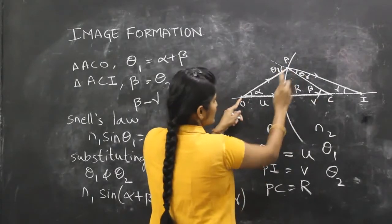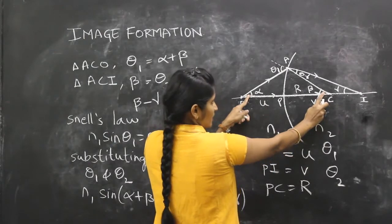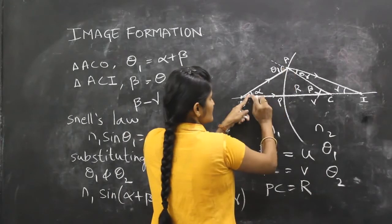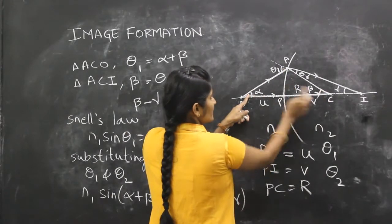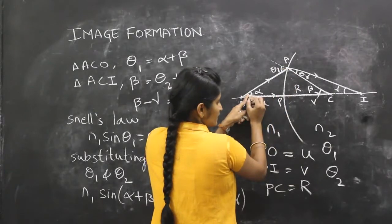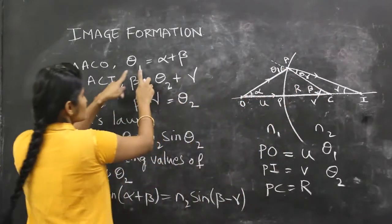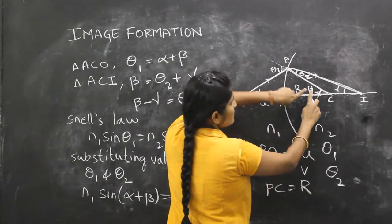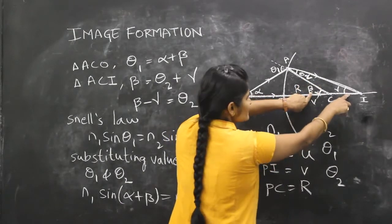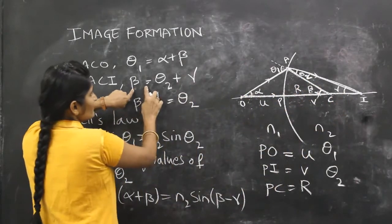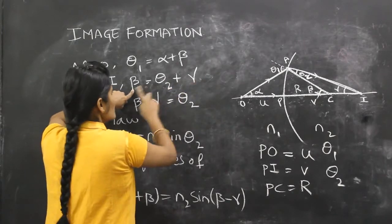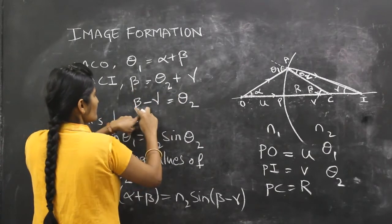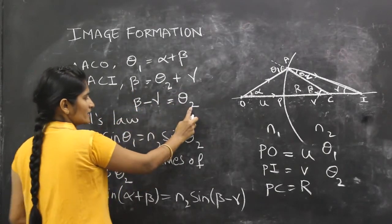Now from this figure, in triangle ACO, considering angle of incidence as theta 1 and angle of refraction as theta 2 for easy understanding. In triangle ACO, theta 1 is equal to alpha plus beta, because the external angle equals the sum of the interior angles. And from triangle ACI, the exterior angle beta equals theta 2 plus gamma, so theta 2 equals beta minus gamma.